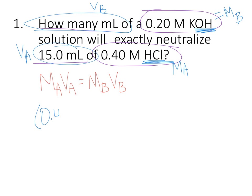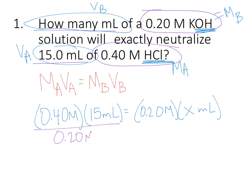From there I just plug it in and solve. MA, 0.40 M, VA, 15 milliliters, equals MB, 0.20 M, VB, X milliliters, because that's what I'm solving for. So trying to solve for X, I'm going to divide both sides by 0.20 M, and that will cancel on the right and on the left, the molarities will cancel, so that my units are going to be milliliters. 0.4 times 15 divided by 0.2, X is equal to 30, and the units are milliliters. So there's number one.